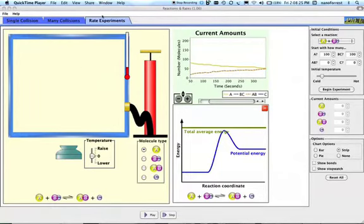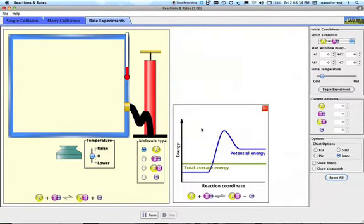I'm now on the Rate Experiments tab of the same simulation. You can see that the setup is really the same type of thing. I've got to hit Reset All here. It's a lot like the Mini Collision. I like that strip recorder.